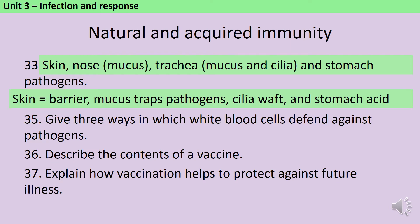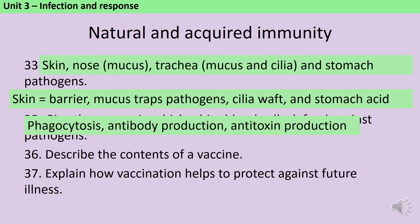You've got two key types of white blood cells that you need to know about. There are your phagocytes, which do phagocytosis where they engulf pathogens and then break them down, and then also your lymphocytes, which produce antibodies and antitoxins.